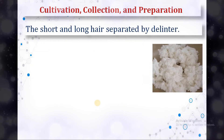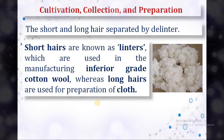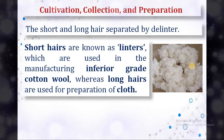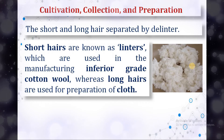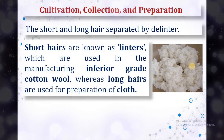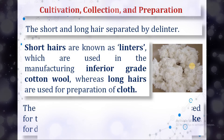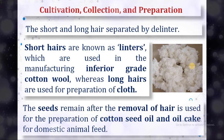The short and long hairs are separated by a delinter. The short hairs, known as linters, are used in the manufacturing of inferior grade cotton wool, whereas the long hairs are used for the preparation of cloth. The seeds remaining after removal of hair are used for the preparation of cottonseed oil and oil cake for domestic animal feed.